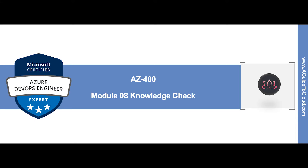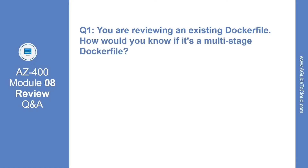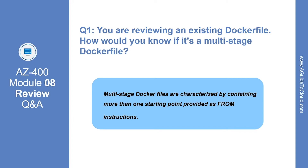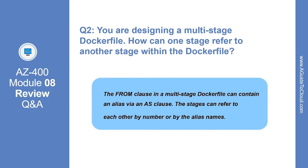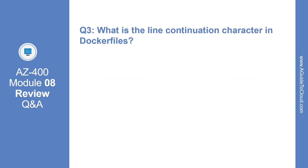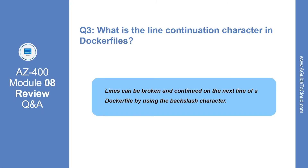In this section we are going to go through Module 8 Knowledge Check. You are reviewing an existing Dockerfile — how would you know if it's a multi-stage Dockerfile? Multi-stage Dockerfiles are characterized by containing more than one starting point provided as a FROM instruction. You are designing a multi-stage Dockerfile — how can one stage refer to another stage? The FROM clause in a multi-stage Dockerfile can contain an alias via an AS clause, and stages can refer to each other by number or by alias name. What is the line continuation character in Dockerfiles? Lines can be broken and continued on the next line using the backslash character.